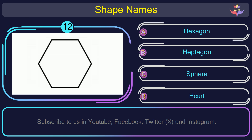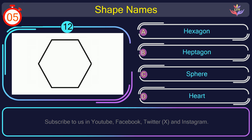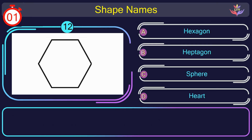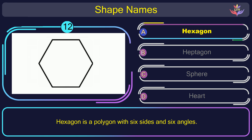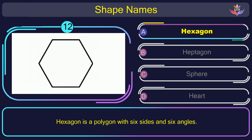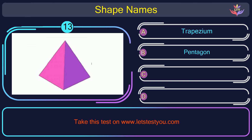Question number 12. Can you name the shape you see in this picture? The correct answer is option A. Hexagon. Hexagon is a polygon with six sides and six angles.